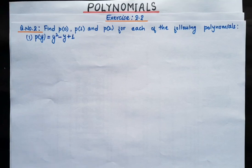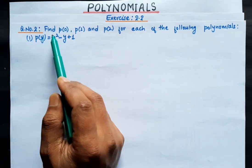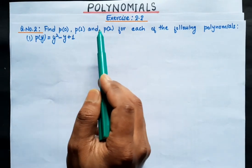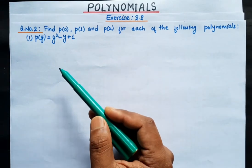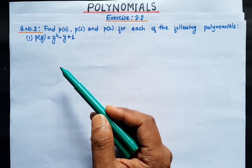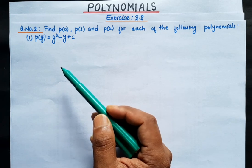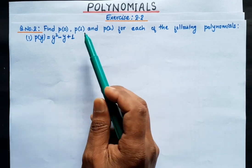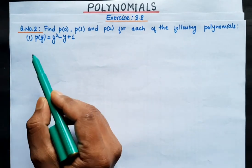Hello my dear children, welcome to our math class. In this class we are going to solve question number two from exercise 2.2. Question number two has four polynomials, and we have to find P0, P1, and P2 for each of them.